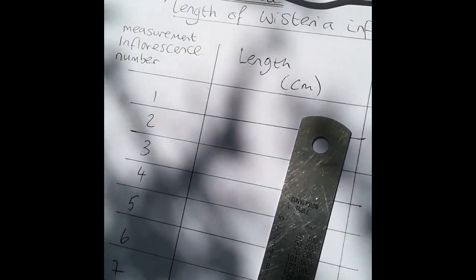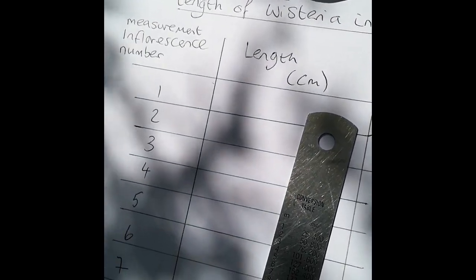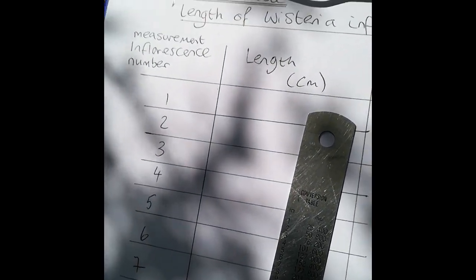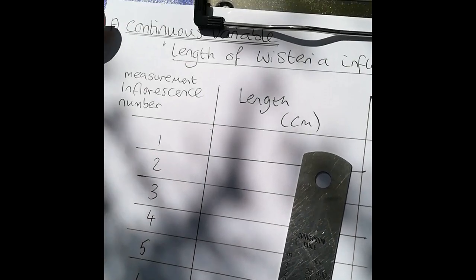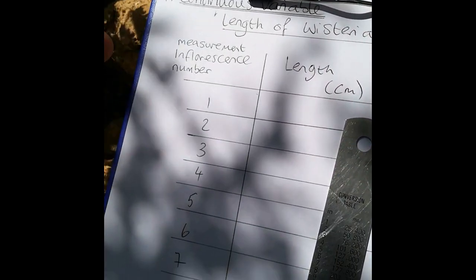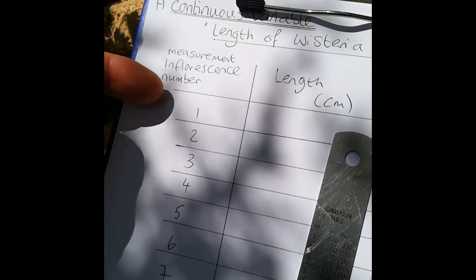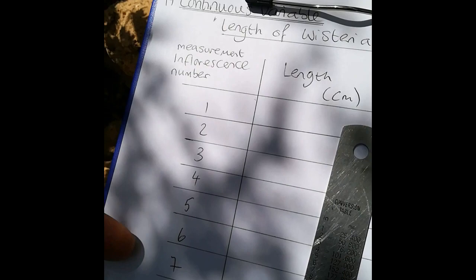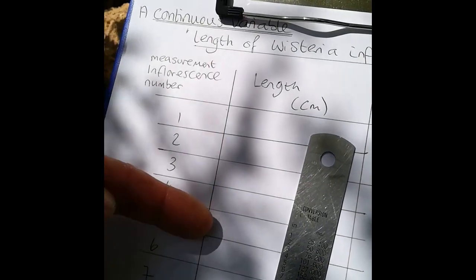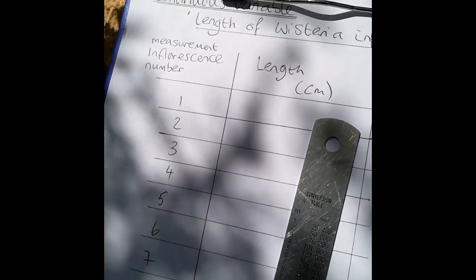Firstly, you need to get a results table drawn up. Here's my title: continuous variable — length of wisteria inflorescence. I've got measurement number down one column and the lengths I'm going to record in the other.